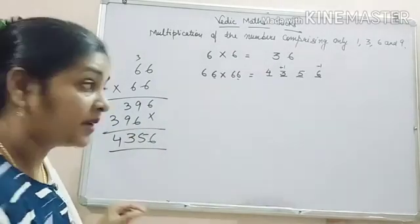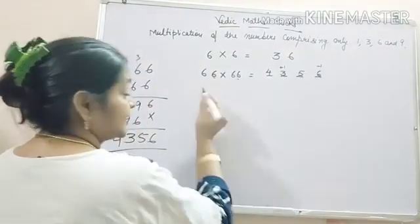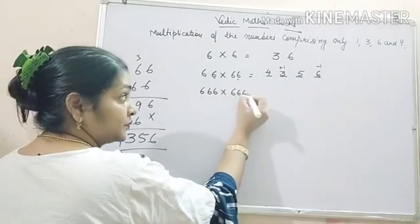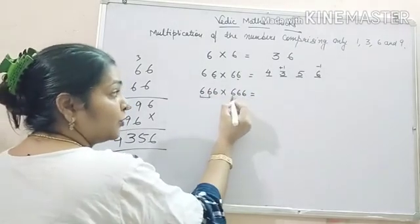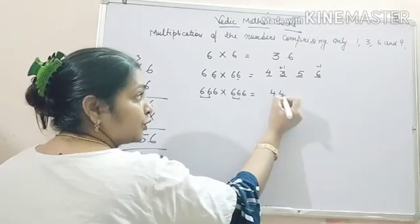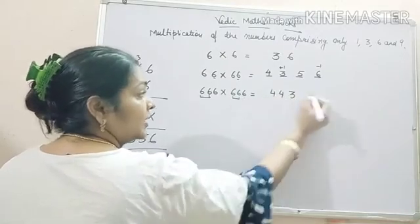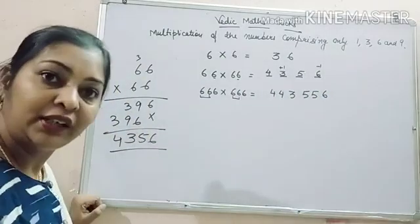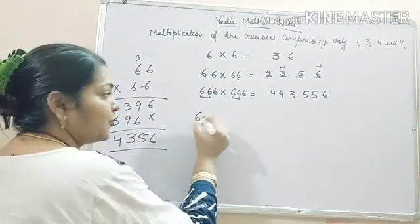And trick remains same. Suppose there are 3 sixes. So what you have to do? For these 2 sixes, put 444, 3, 555, 6. This is your answer. If there are 4 sixes...